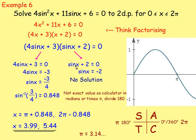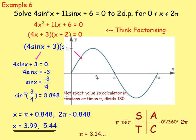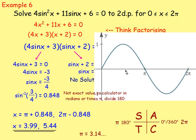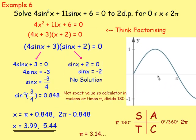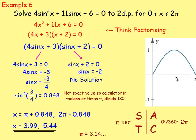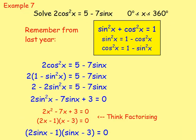Just remember: if you end up with sine x = −2, for example, that doesn't exist — the maximum is 1 and the minimum is −1. Discard that case and continue with the valid solution to get your answers.